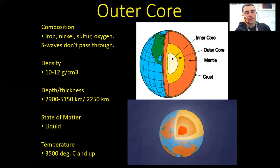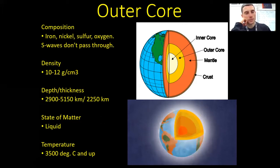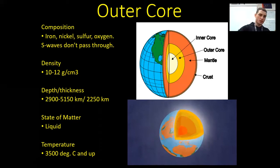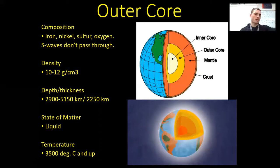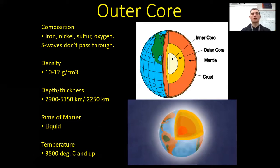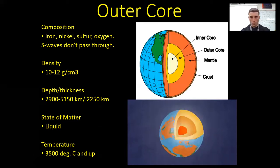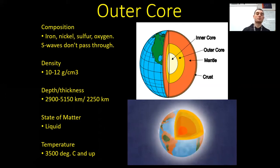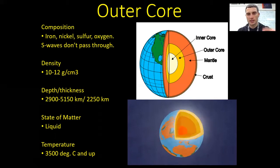Density, depth, and thickness are measurements — we're looking at how compact it is and how far down it goes. Record those numbers as well; they're there for reference for our quizzes. You don't need to memorize the numbers — just know the relative values, which layer is more dense than another, which is deeper. State of matter — super important — this is the highlight of the outer core: it is the only layer that is a liquid. All other earth layers are solid. The temperature is 3,500 degrees and higher — still pretty hot. Key takeaway: this is the only liquid layer in the earth.